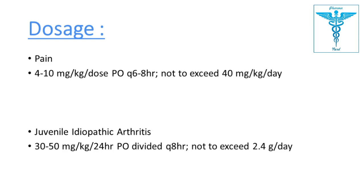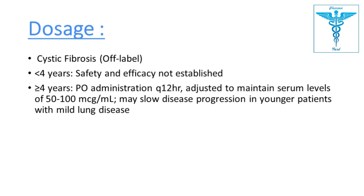For pediatric pain: 4 to 10 mg per kg per dose orally every six to eight hours; dose should not exceed 40 mg per kg per day. For juvenile idiopathic arthritis: 30 to 50 mg per kg every 24 hours in divided doses, not exceeding 2400 mg per day. For cystic fibrosis (age under 4 years: safety not established; age 4+ years): oral administration every 12 hours with serum levels maintained between 50 to 100 mcg/mL.